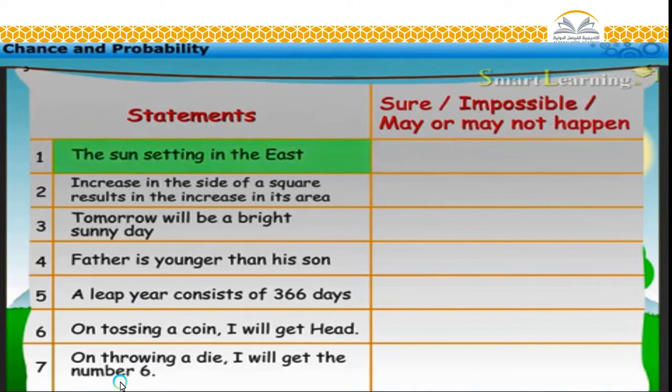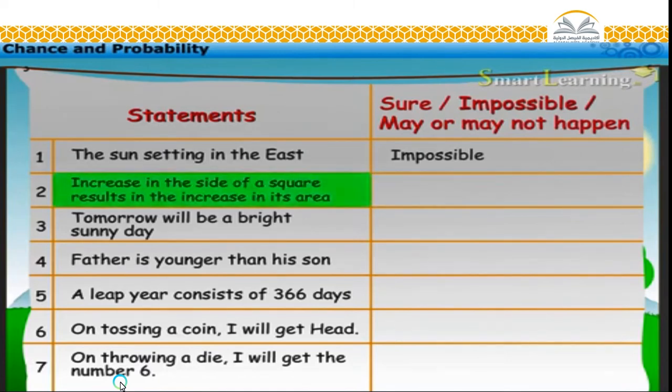The sun setting in the east. This is impossible, because the sun rises in the east. Increase in the side of a square results in the increase in its area. This is sure, because area of a square is equal to side into side.